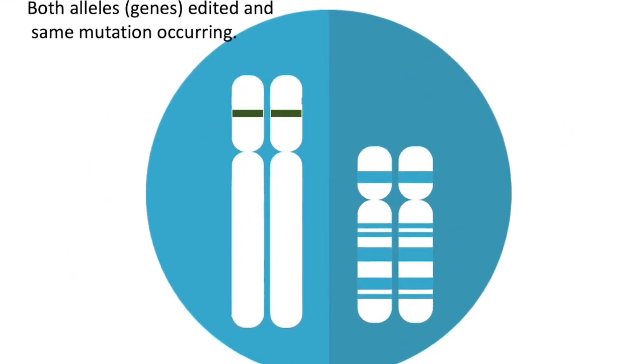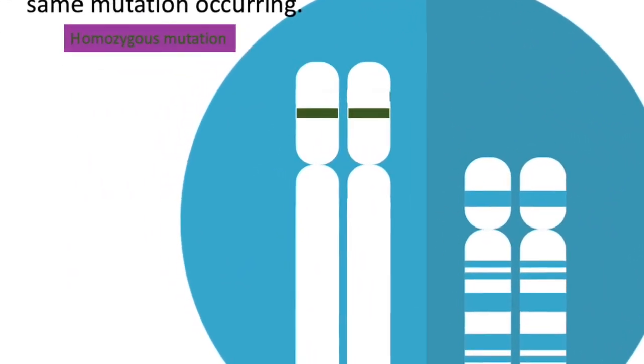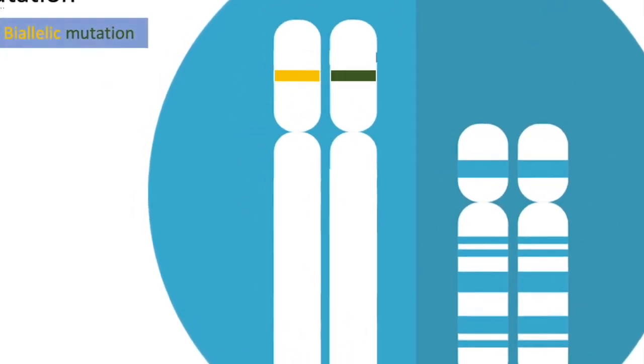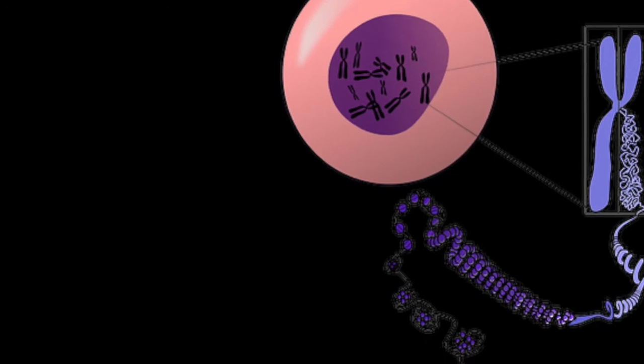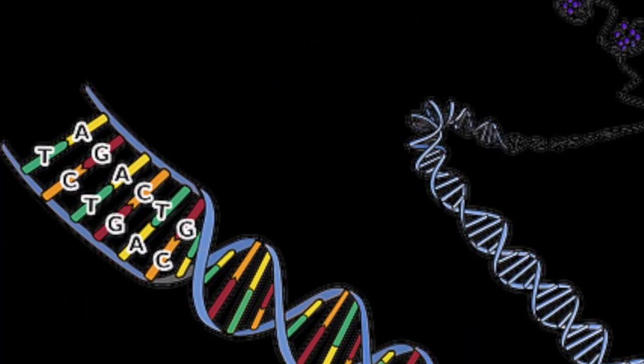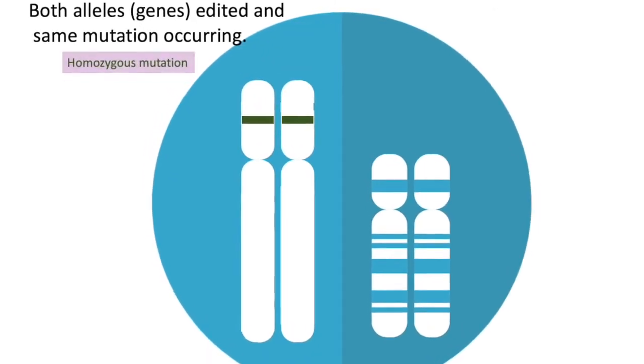But you really want to have both alleles edited in order to be sure that the gene of interest is knocked out. After Cas9 editing, you do need to check if you have had both alleles edited.